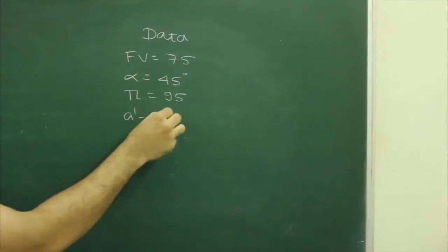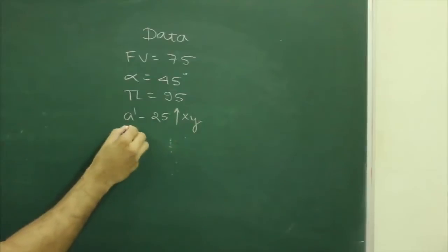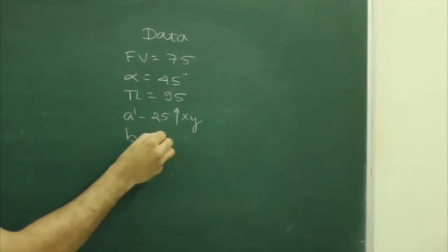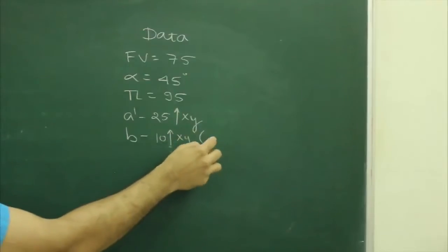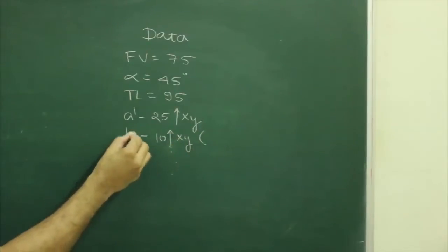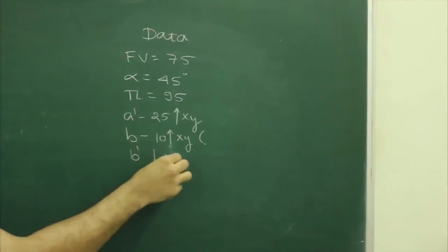A' is 25M above XY. Point B' is in third quadrant and B' is 10M above XY, because it is behind B' and point B' would be below XY.